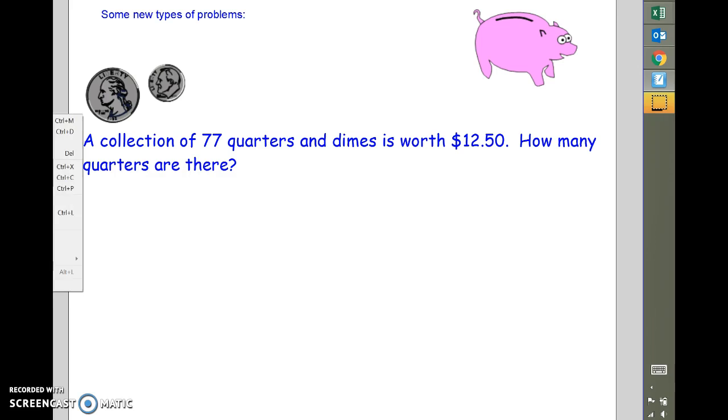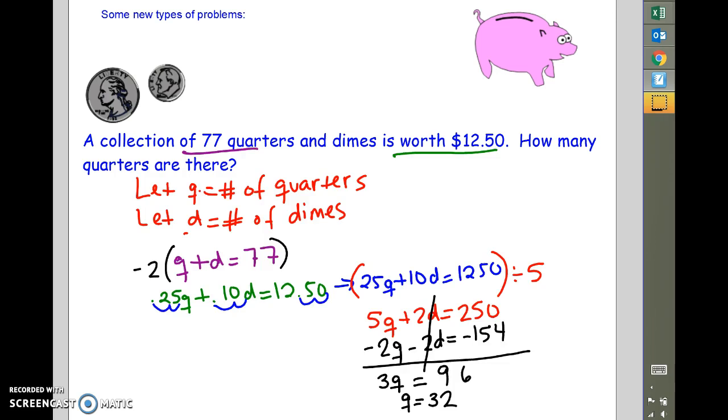Here is one of the problems using money, which we have gone over. So take a second and try to solve this problem. Make sure you pause your video. Okay, so we're back. And if you notice, our let statements are our quarters and dimes. The number of quarters, the number of dimes. So our first equation has to do with how many there were. Q plus D equals 77. Our second equation is what they're worth. So don't forget to attach the values. So 0.25Q, 0.10D equals $12.50.